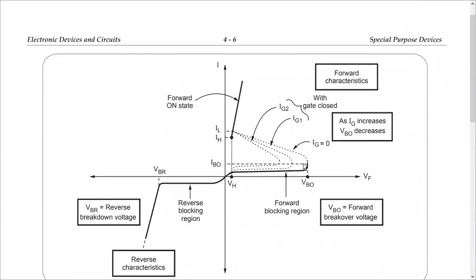When Ig is zero this is the breakover voltage. When you give some gate current the characteristics will be like this — shifted. When we further increase gate current, the characteristics will further shift and the breakover voltage will further shift towards the left. This is what happens in the forward biased condition.